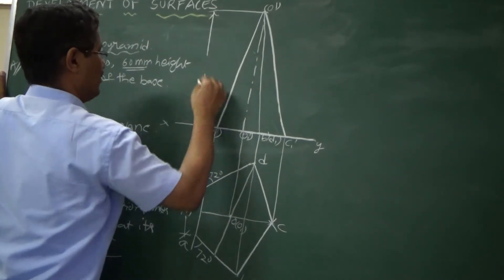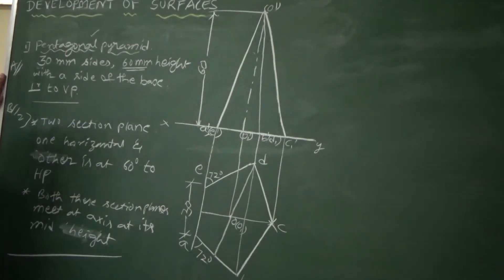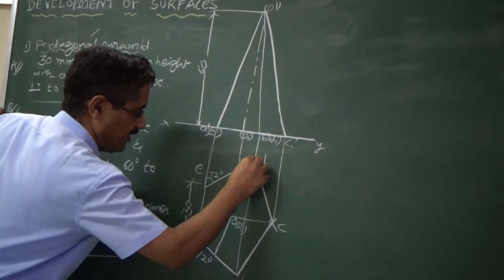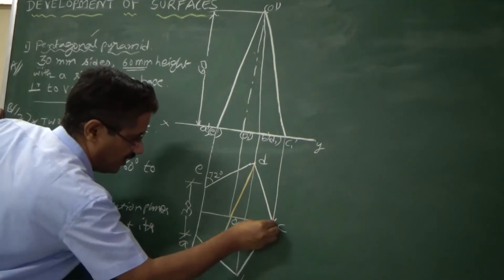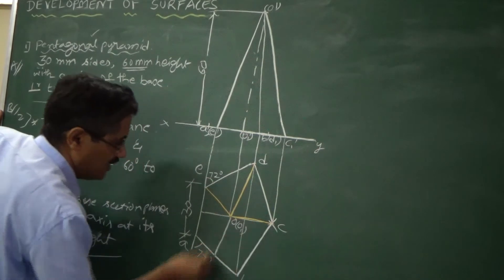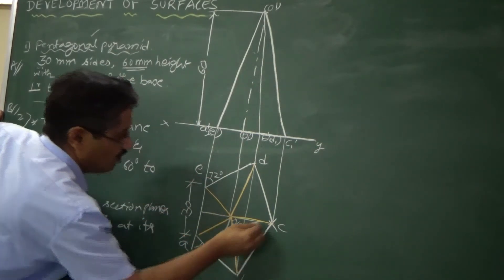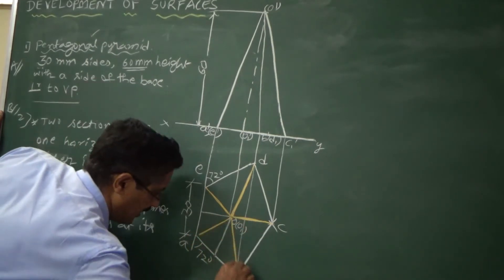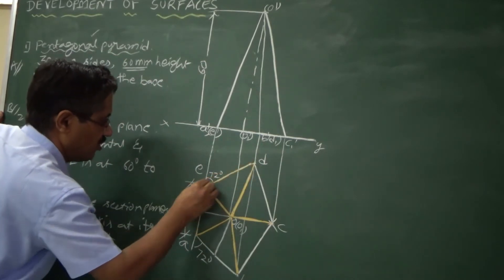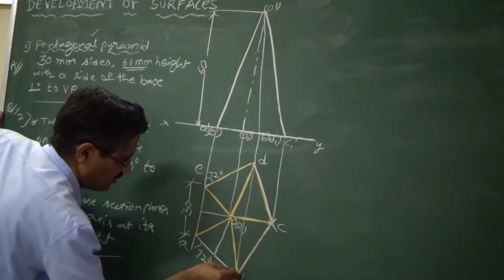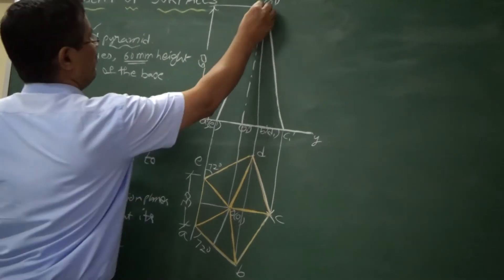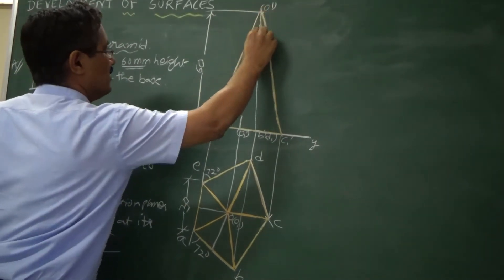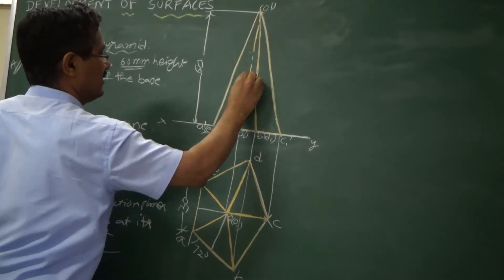We have constructed the pentagonal pyramid to the given height of 60 mm — this completes Stage 1. One important thing in the pyramid case: all corners must be connected to the apex point O1. If you do not do this, the problem will be wrong. The top view shows all corners connected to O1 with thick lines. The front view has three thick lines and one axis line.